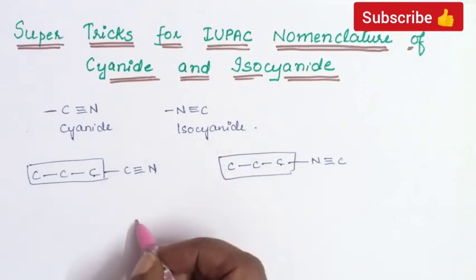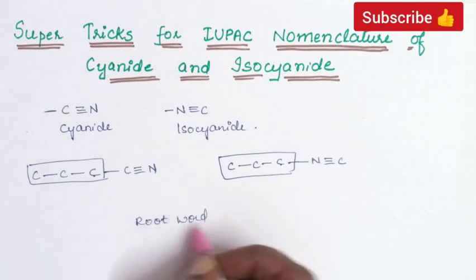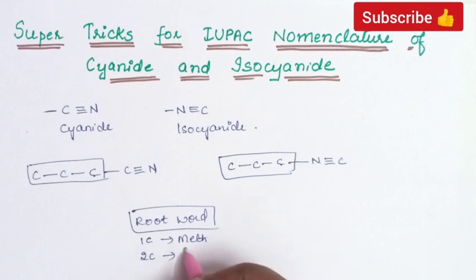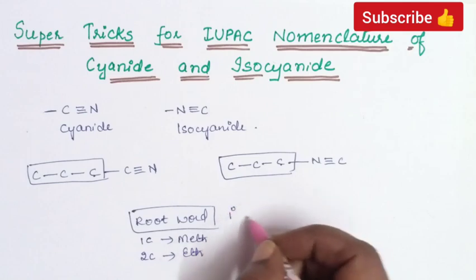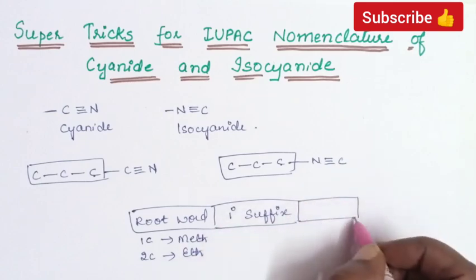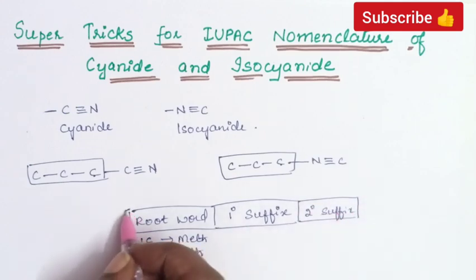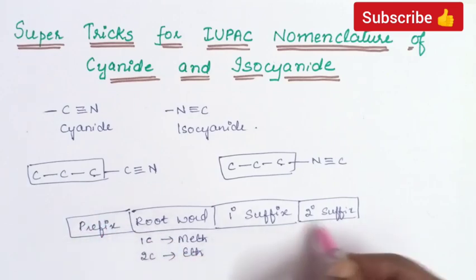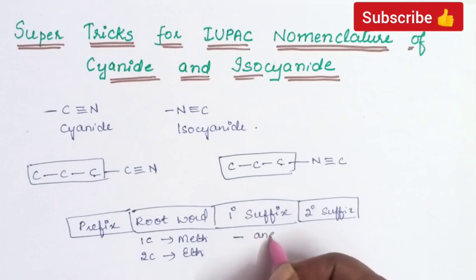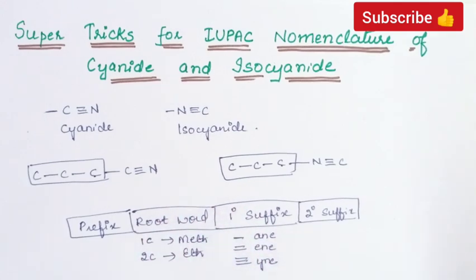In IUPAC nomenclature, there is a root word indicating the number of carbon atoms — if one carbon atom is present, the root word is meth; if two carbon atoms, it is eth. After the root word we have the primary suffix, then the secondary suffix, and we also have a prefix. The primary suffix indicates whether a single bond, double bond, or triple bond is present.